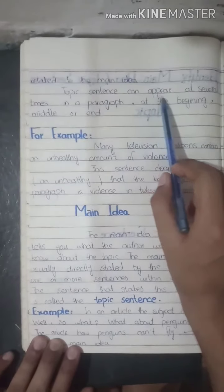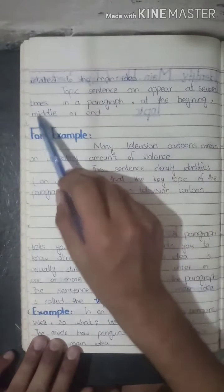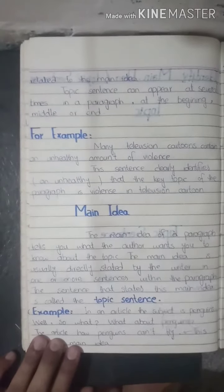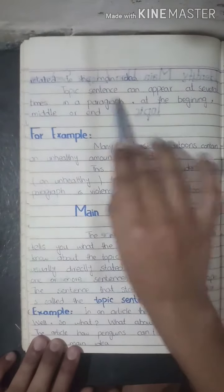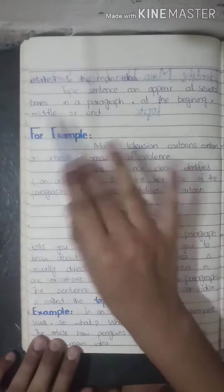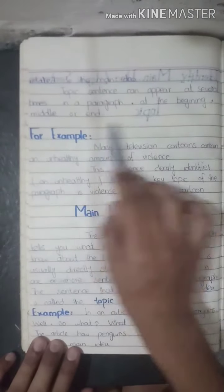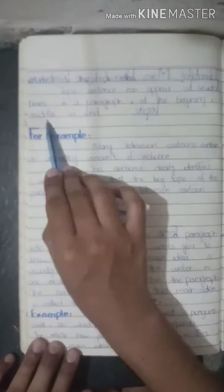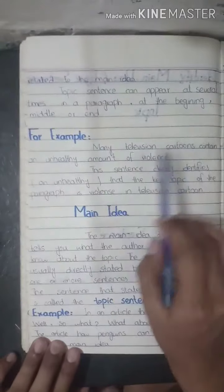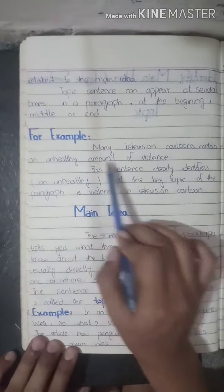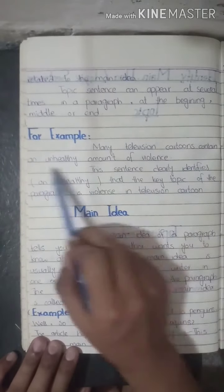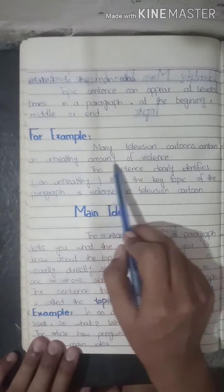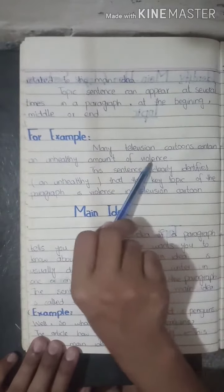The topic sentence can appear at several places — at the beginning, middle, or end of a paragraph. For example: 'Many television cartoons contain an unhealthy amount of violence.'